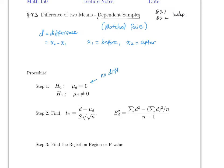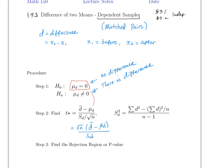If mu_D equals zero, that technically implies there is no difference. If you reject the claim, that means there is a difference between before and after. This is a two-tailed test because it uses a not-equal sign. Once you reach this point, this is identical to Section 8.2. The formula can be written as the square root of n times D-bar minus mu_D, divided by S_D. Since the claim says mu_D equals zero, that term drops out.